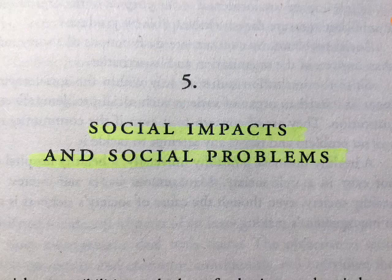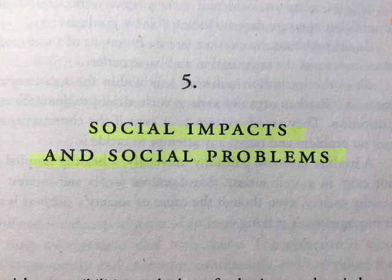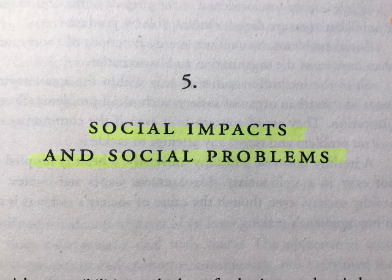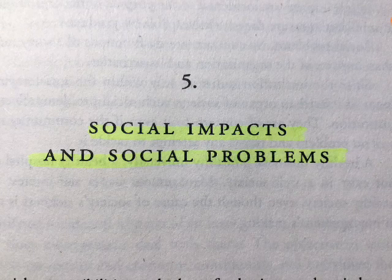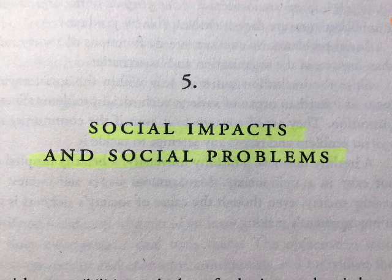The first deals with what an institution does to society. The second is concerned with what an institution can do for society. The modern organization exists to provide a specific service to society. It therefore has to be in society, it has to be in a community, has to be a neighbor, has to do its work within a social setting. But also, it has to employ people to do its work. Its social impacts inevitably go beyond the specific contribution it exists to make.